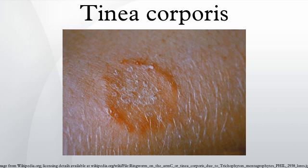Ringworm commonly occurs on pets and the fungus can be acquired while petting or grooming an animal. Ringworm can also be acquired from other animals such as horses, pigs, ferrets, and cows. The fungus can also be spread by touching inanimate objects like personal care products, bed linen, combs, athletic gear, or hairbrushes contaminated by an affected person.